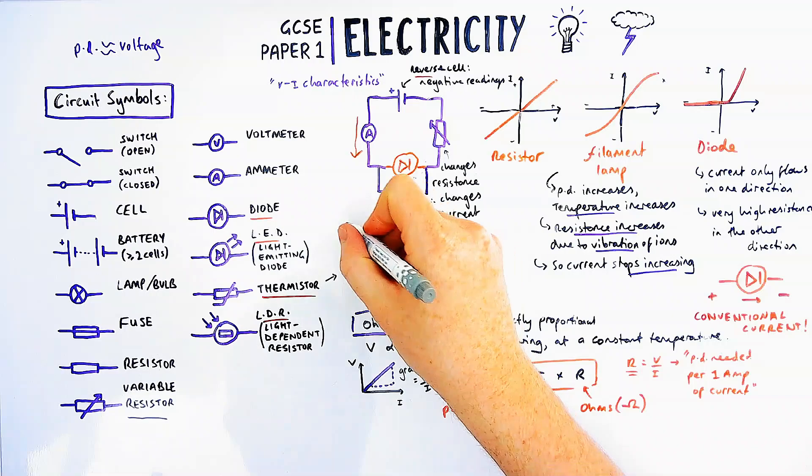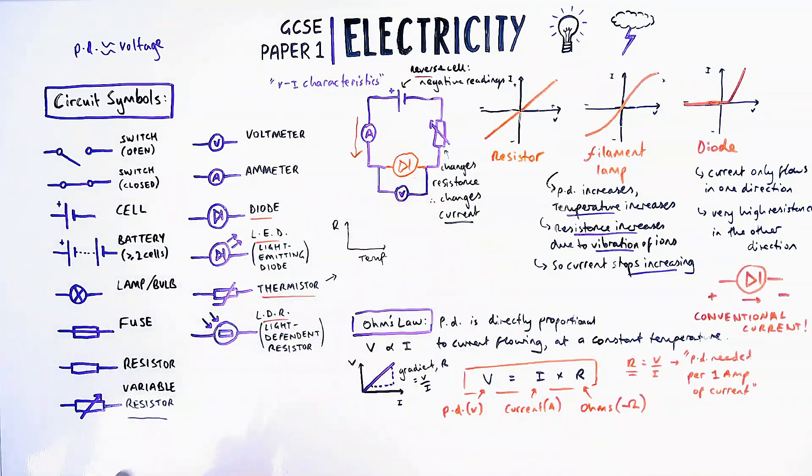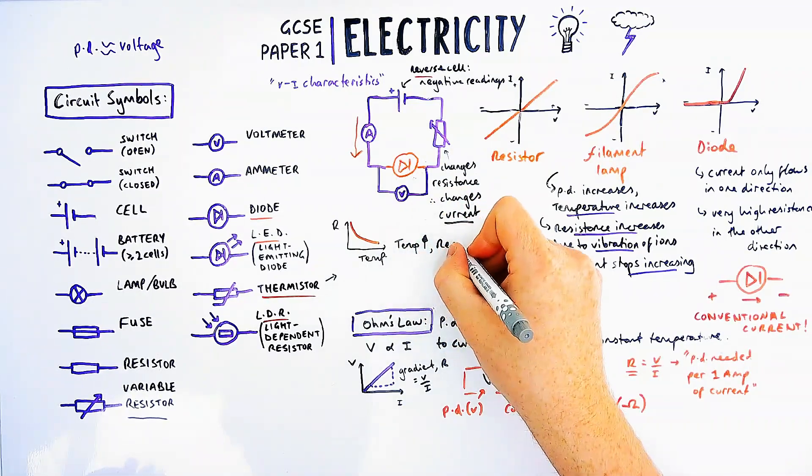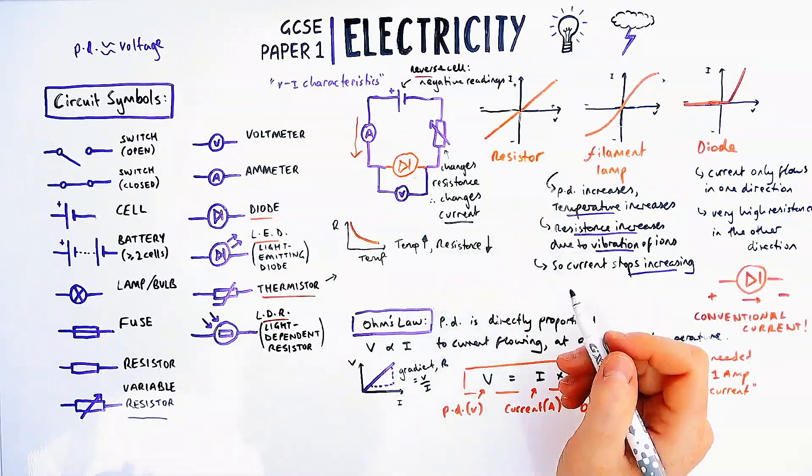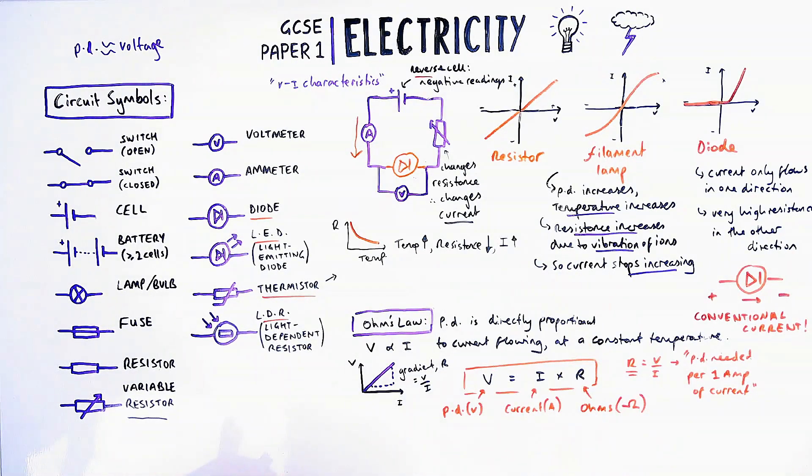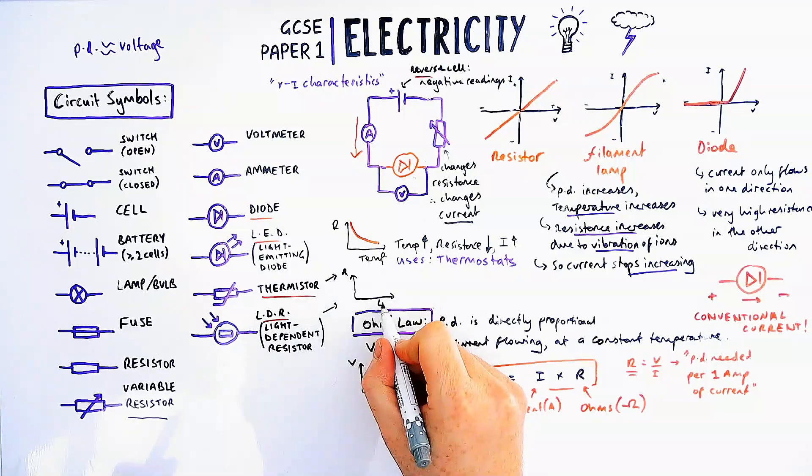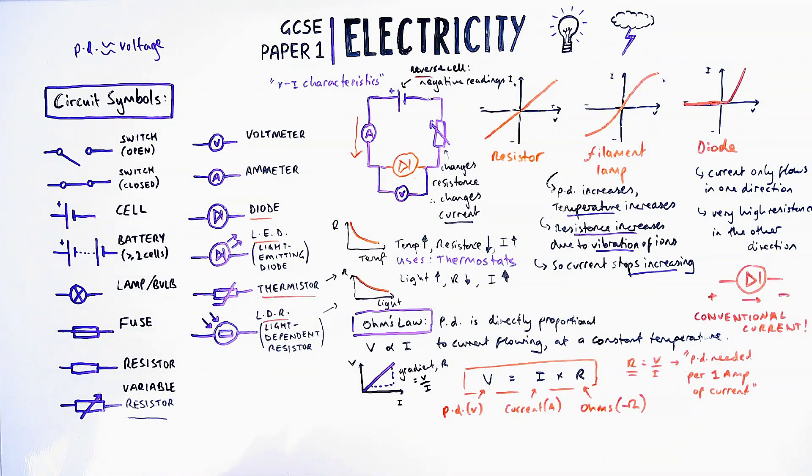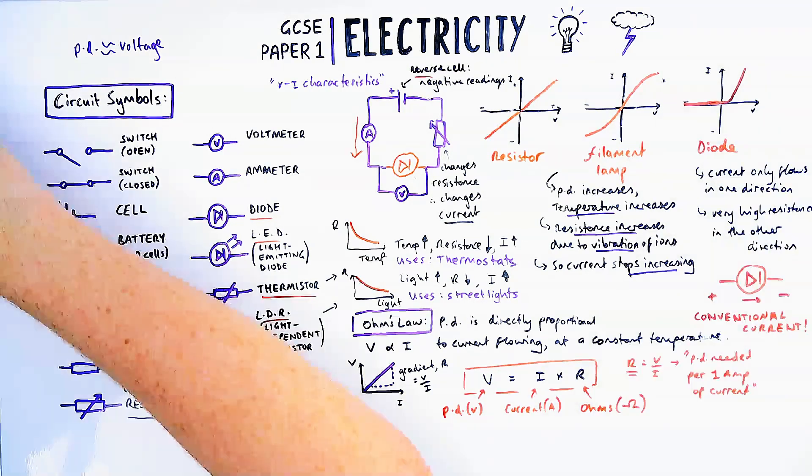The last two components are the thermistor and the light dependent resistor. In a thermistor, when you increase the temperature, normally in a wire the temperature increases the resistance. However, in the thermistor the temperature goes up and the resistance actually goes down. It's made of material that has reduced resistance with more temperature, meaning current can increase. This is useful in thermostats in your home to detect a change in temperature. A light dependent resistor or LDR is very similar but responds to change in light. An increase in light means the resistance goes down and current increases. This is used in street lights which respond to a change in light level in the evening.